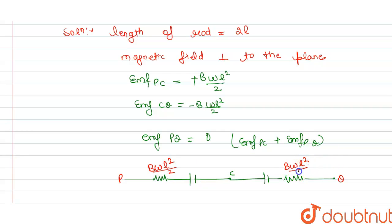So here we have the induced EMF is B omega l squared divided by 2, and this is B omega l squared divided by minus, so this is minus here for CQ. So this is the answer for the question, thank you.